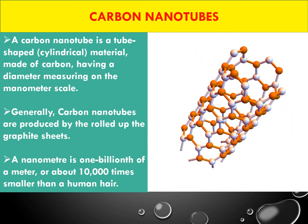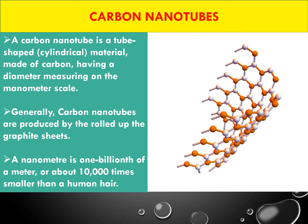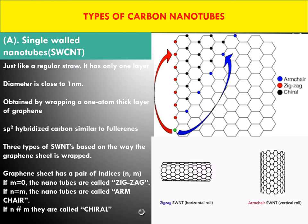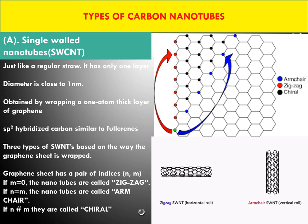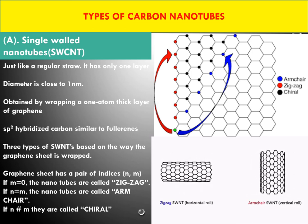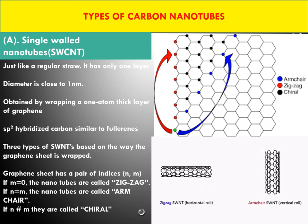A nanometer is one billionth of a meter — about ten thousand times smaller than a human hair. Carbon nanotubes are mainly classified into two types: single-wall carbon nanotubes and multi-wall carbon nanotubes. Single-wall carbon nanotubes are just like a regular straw in the millimeter-centimeter range, but with only one layer.